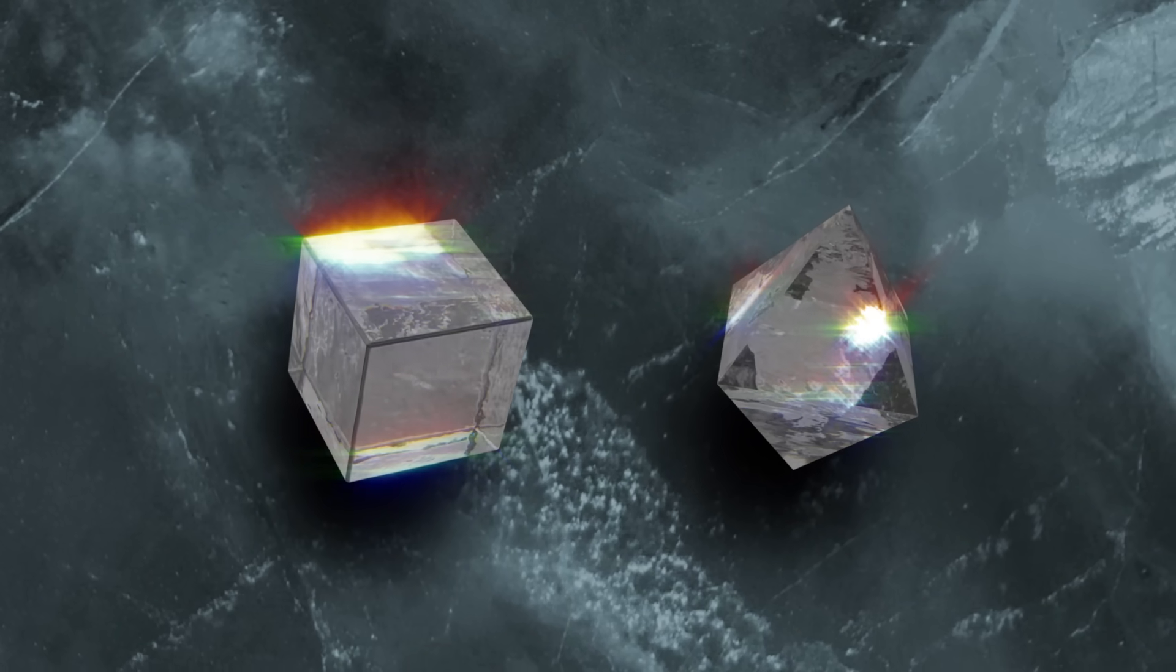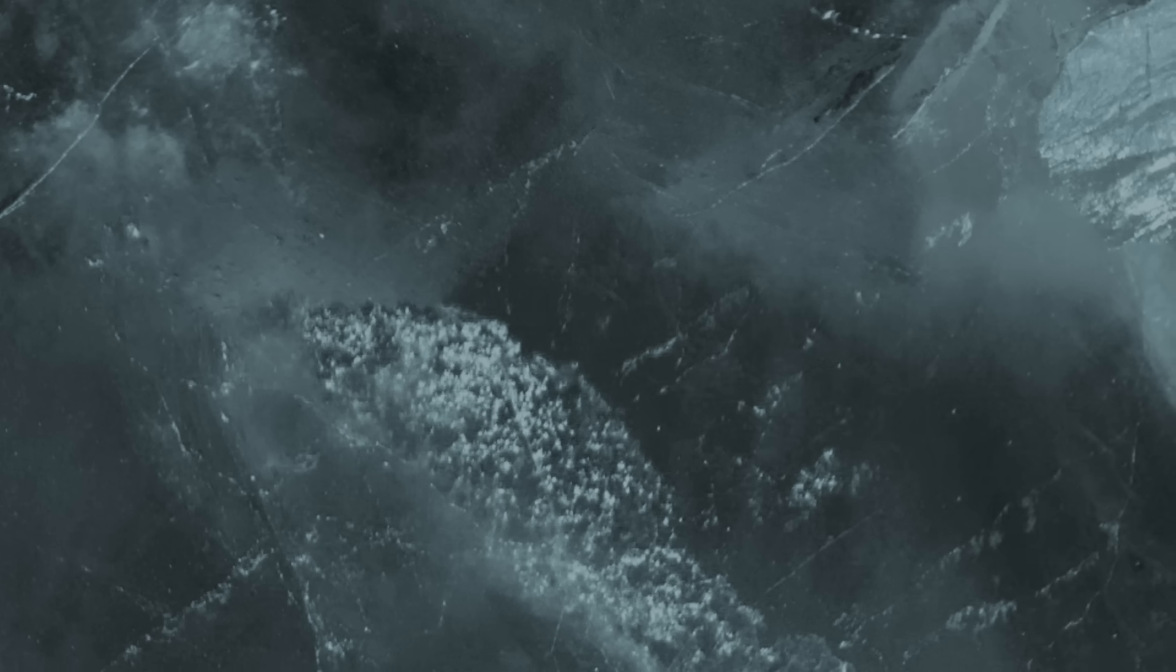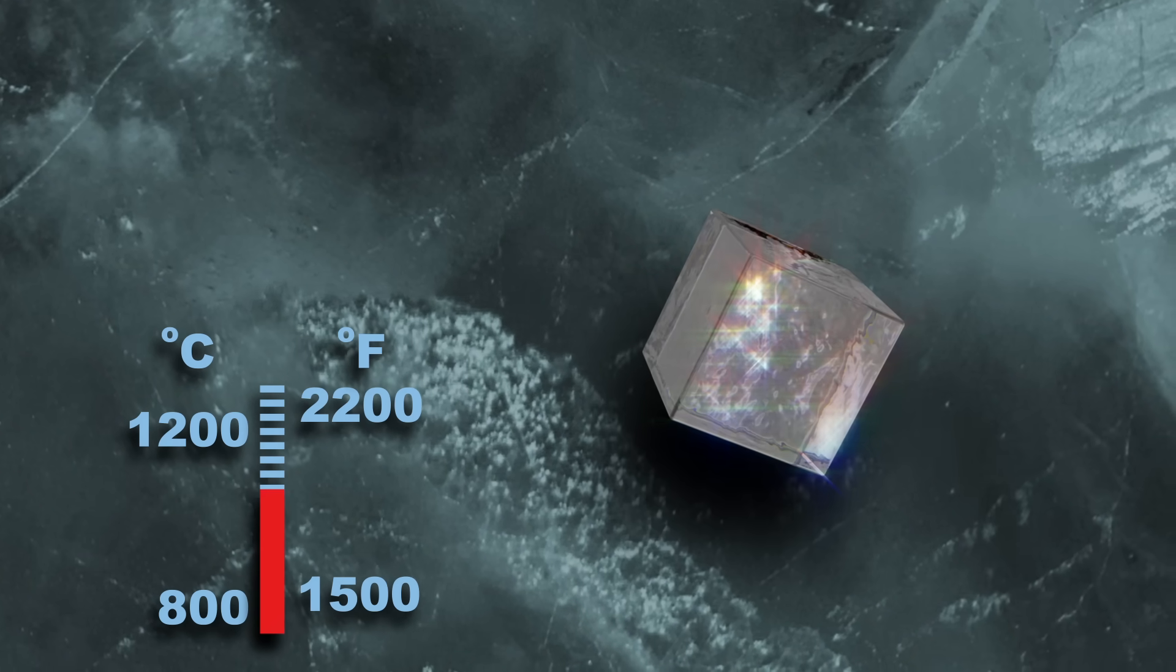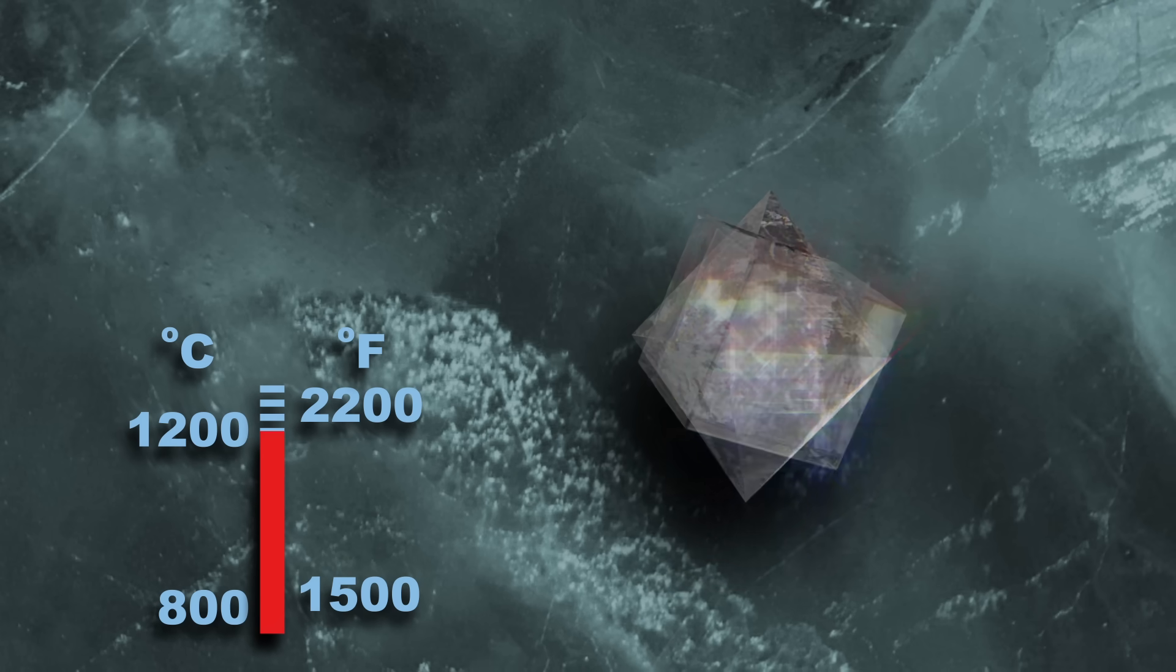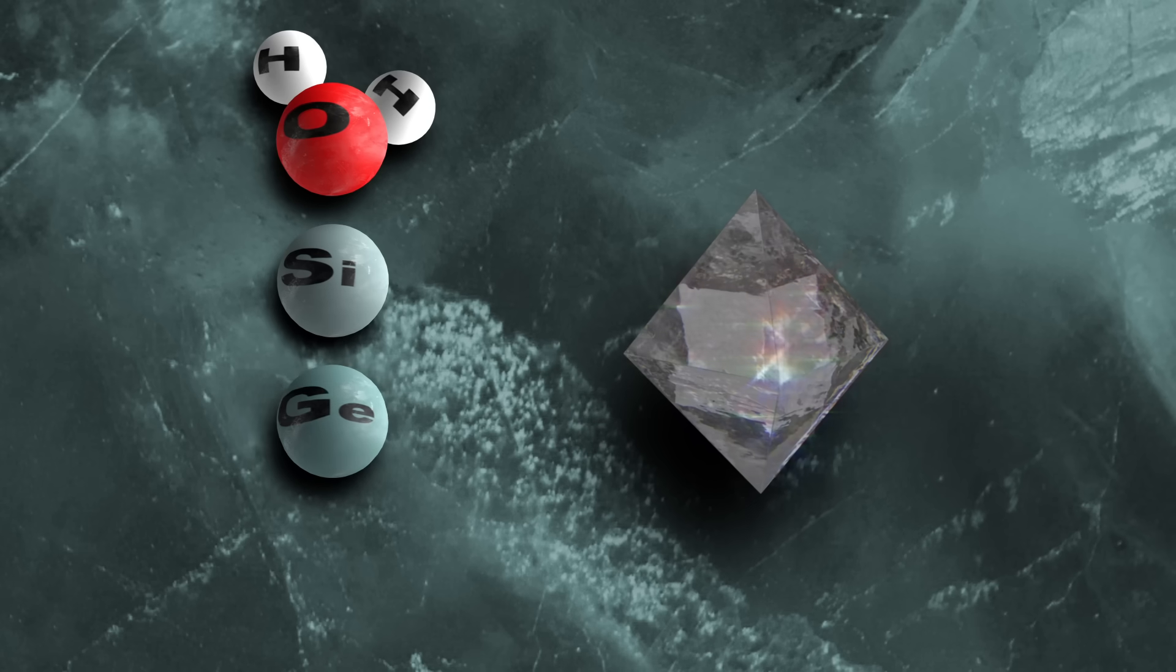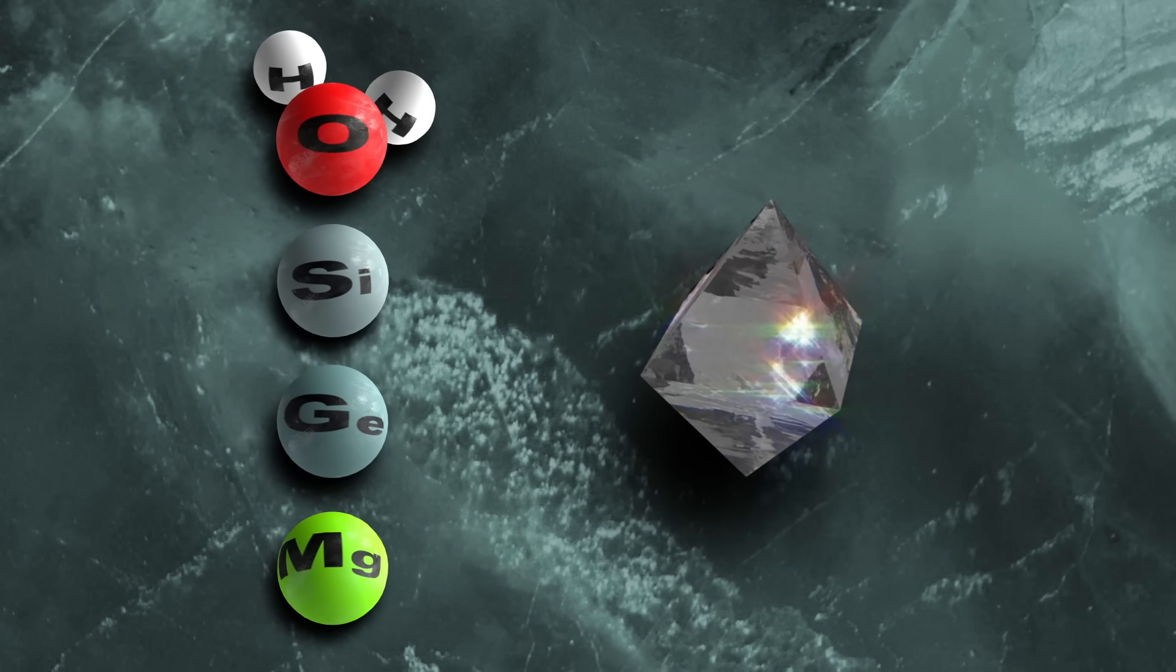While we can't directly observe growth conditions in the mantle, laboratory experiments have shown some evidence that diamonds tend to grow into cubes at lower temperatures and octahedrons at higher temperatures. Trace amounts of water, silicon, germanium, or magnesium might also influence a diamond's shape.